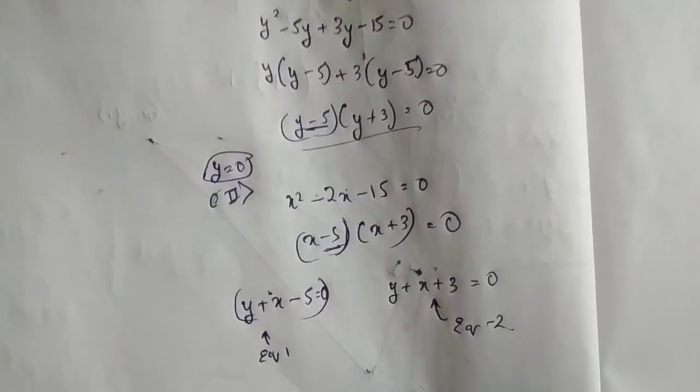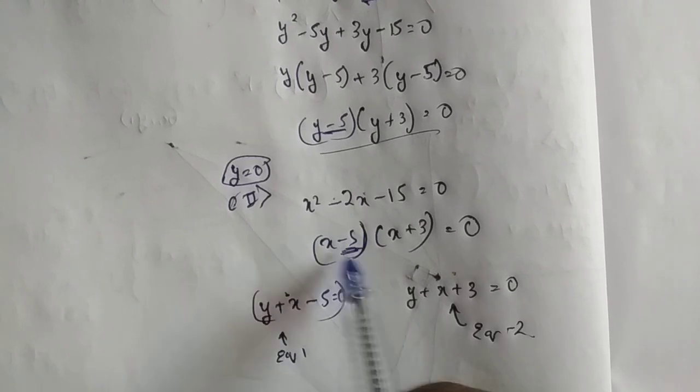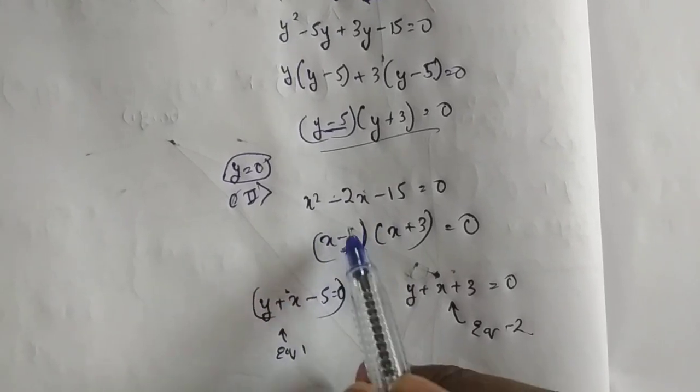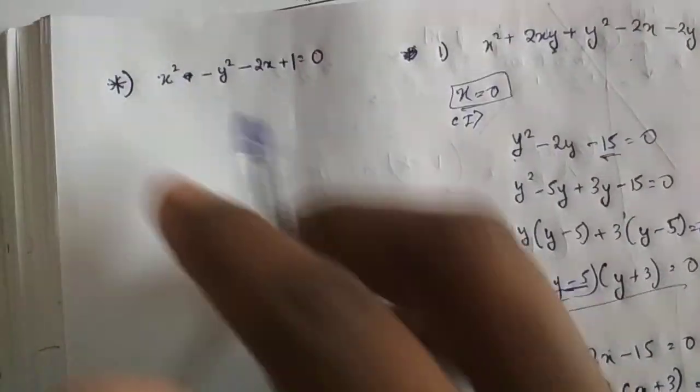So this is called the Vedic method where you factorize it and check the coefficients. They have to have the same value. You can have minus 5 and plus 5, I am going to show this next example to you.